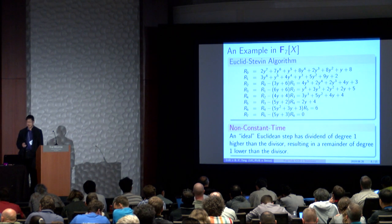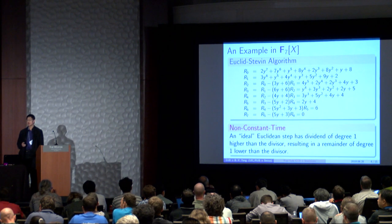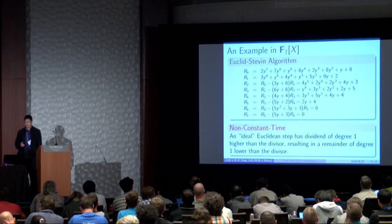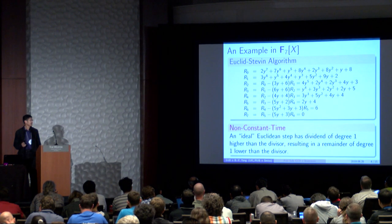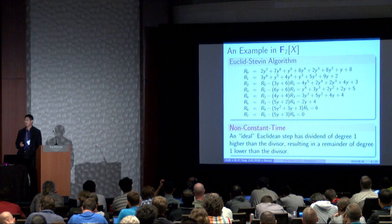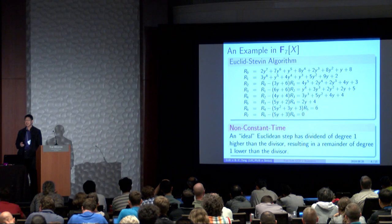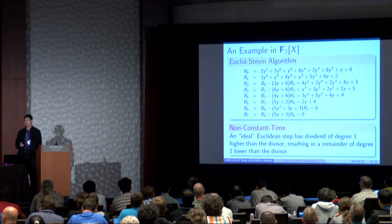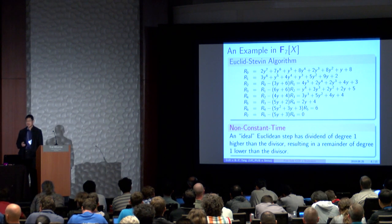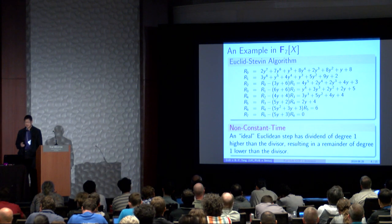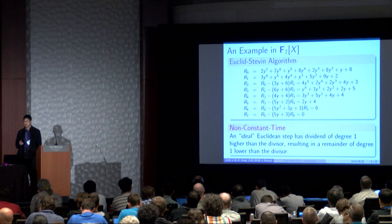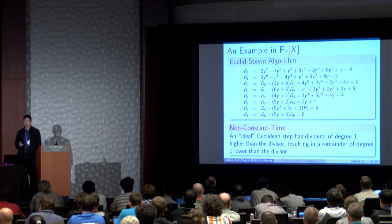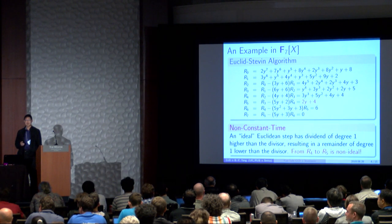So let's take a look at the Euclidean algorithm, the extended GCD in F7 of x. So we have R0 and R1. You would recognize that these are digits from pi and e. And we are getting 7th and 8th because sometimes you get the results in non-reduced form. So this is not a constant time algorithm because the ideal Euclidean step has a dividend that's one degree higher than the divisor.